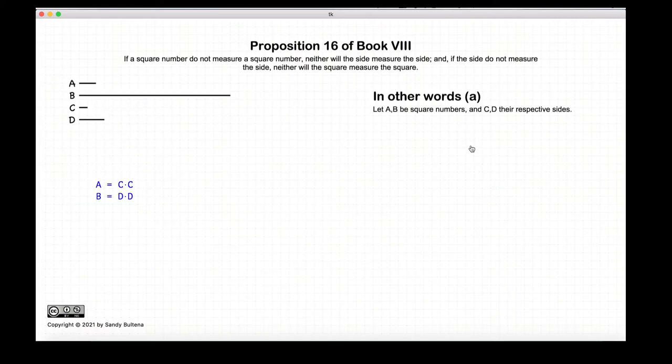Now this proposition states that if you have two square numbers, in other words A is equal to C squared and B is equal to D squared, so C and D are referred to as sides, then if A does not measure B, then C does not measure D.